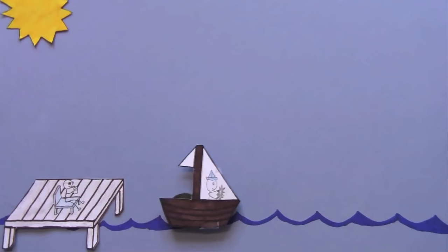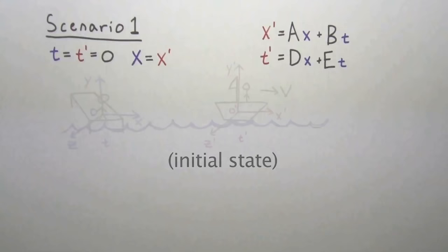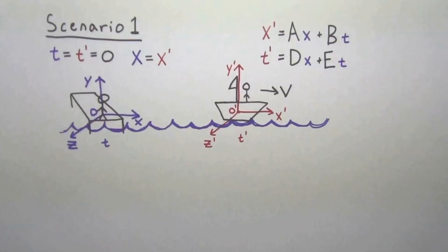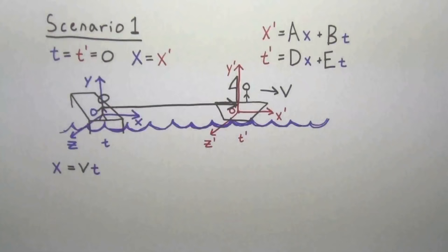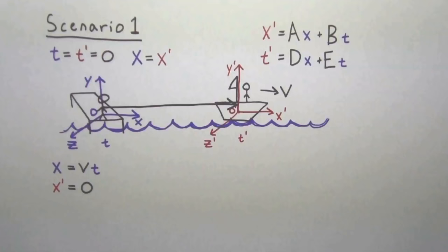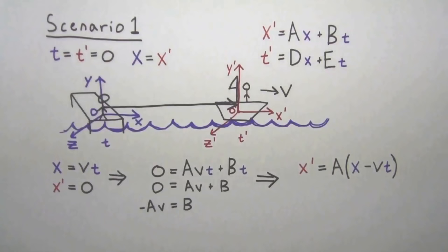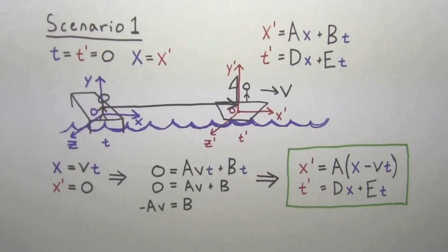The first scenario is that of a boat moving with a constant velocity with respect to the dock. Suppose we want to determine how each observer would describe the boat's location. At t equals t prime equals zero, x and x prime are initially at the same location. The person on the dock perceives the boat to be moving with a velocity v, so after any interval of time, the person on the dock will see the boat as having gone a distance of vt. However, from the boat's perspective, the dock is moving backwards with a velocity negative v, so the boat's position is always at x prime equals zero. Plugging these into our transformation, we derive that minus av must equal b, giving us x prime equals ax minus avt and t prime equals dx plus et.